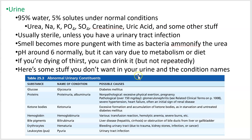Here's some stuff you don't want in your urine and the names of the conditions. Glucose in urine is glycosuria. Ketone bodies in urine is ketonuria. Hemoglobin in urine is hemoglobinuria. A lot of them have easy names — learn those.